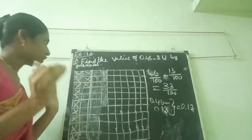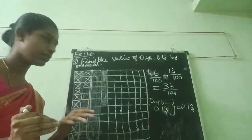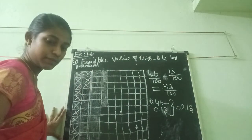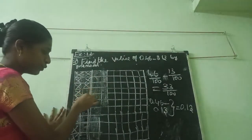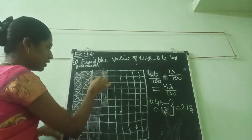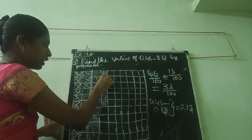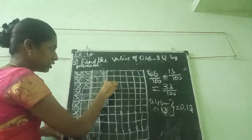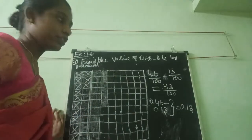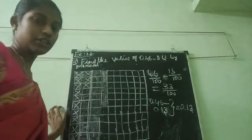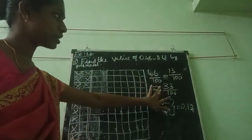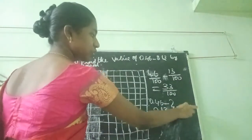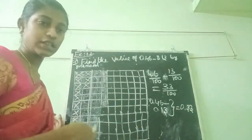I did not cancel those remaining boxes — that is the answer. Counting the uncancelled boxes: 1, 2, 3 ... up to 33. We have 33 boxes shaded. That is the answer in fractional method. Now we want to do in decimal point. The answer is 0.33. This is the answer for this sum.